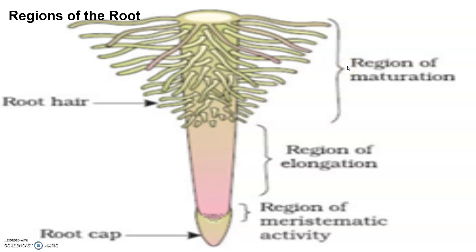The cells of the elongation zone gradually differentiate and mature. The zone proximal to the region of elongation is called the region of maturation. From this region, some epidermal cells form very fine, thin, delicate, thread-like structures called root hairs, which absorb water and minerals from the soil.